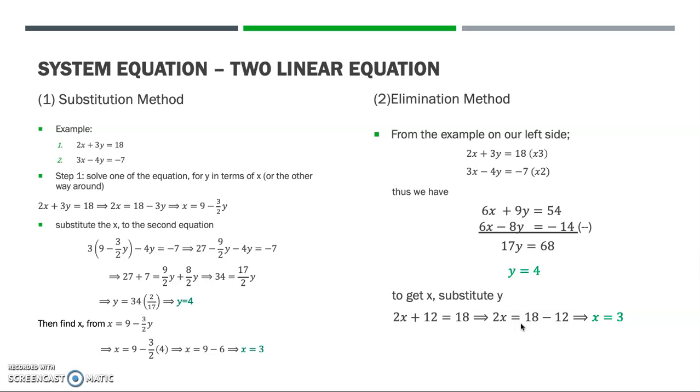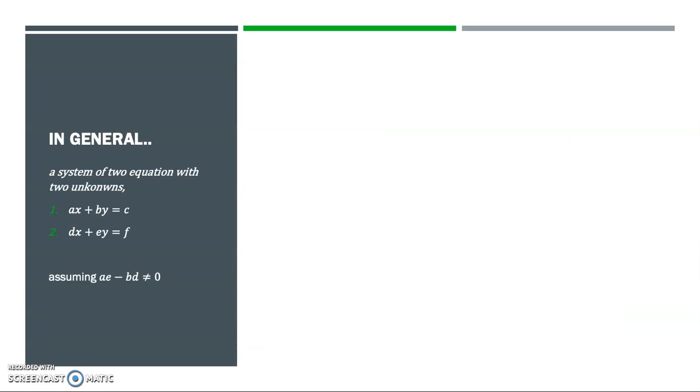Here you can compare both methods give the same solution. For a system of two equations with two unknowns, and assuming AE minus BD does not equal 0,